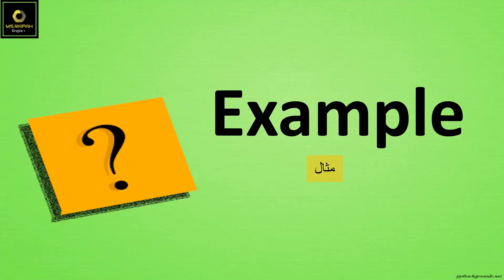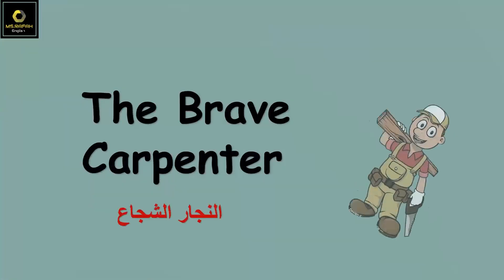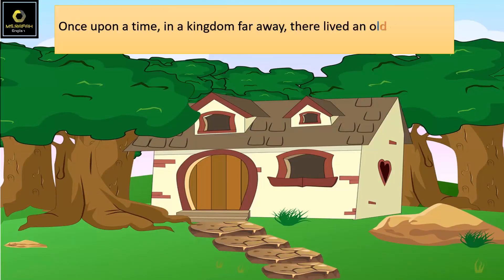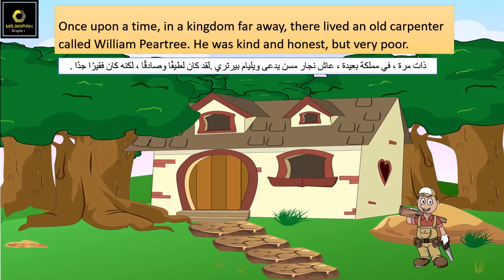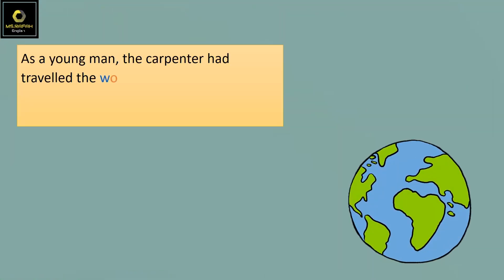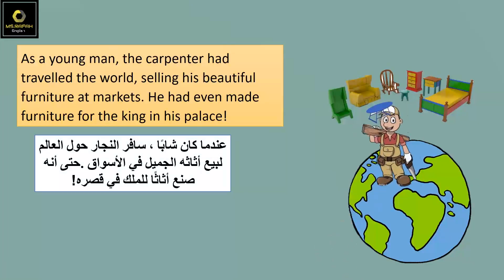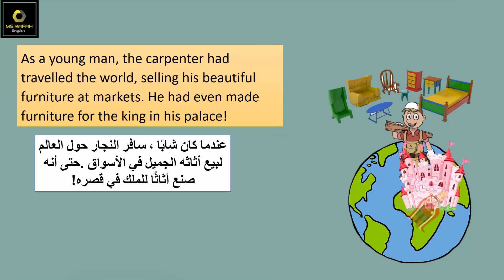Example: The Brave Carpenter. Once upon a time, in a kingdom far away, there lived an old carpenter called William Peartree. He was kind and honest, but very poor. As a young man, the carpenter had traveled the world, selling his beautiful furniture at markets. He had even made furniture for the king in his palace.